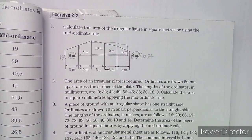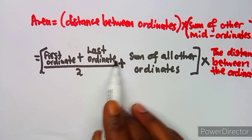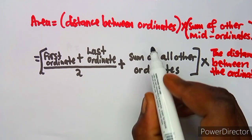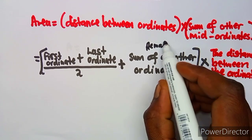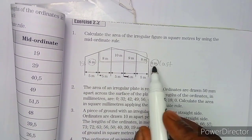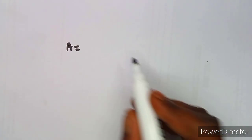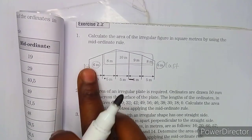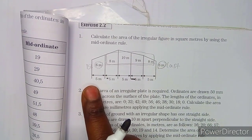We want to calculate the area. Our formula is: first plus last ordinate divided by two, plus the sum of all other ordinates. So the first and last ordinates are added: it's 6 plus 6 over 2. Six is your first ordinate and six is your last ordinate, divided by two.